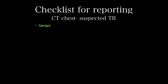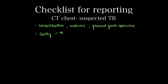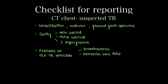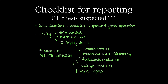Checklist for reporting TB cases: look for consolidation, nodules or ground glass opacities and mention the segments or lobes involved. If a cavity is found, mention whether it is thin-walled or thick-walled and look for aspergilloma. Also look for features of old tuberculosis — bronchiectasis, bronchial wall thickening, atelectasis or collapse of any lung segment, calcified nodules, and fibrotic opacities.